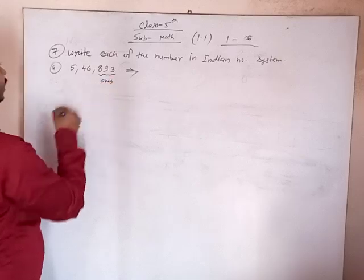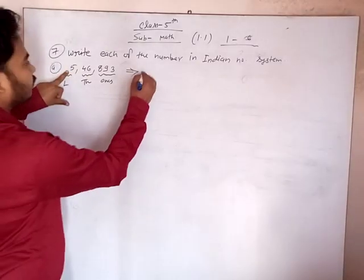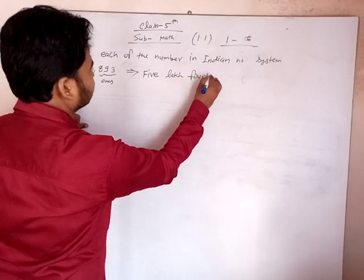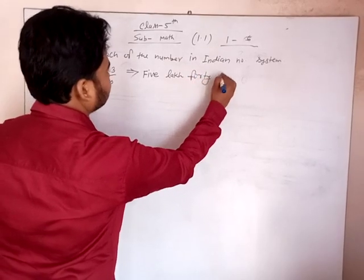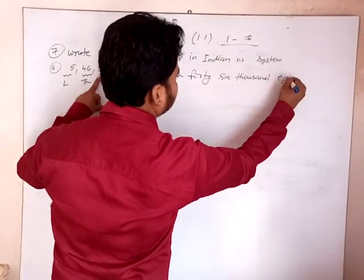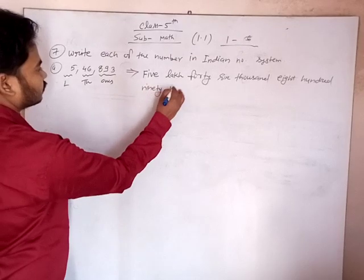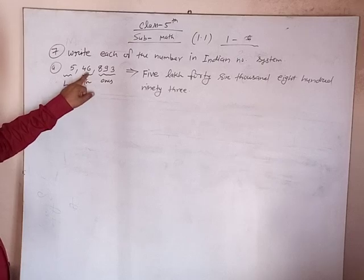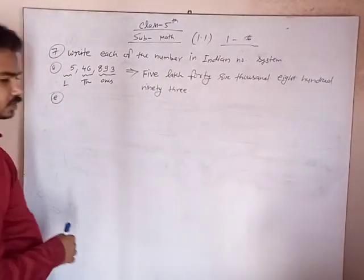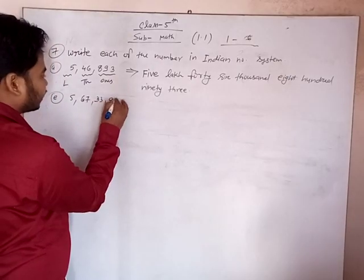In the Indian number system, this is the ones period, this is the thousands period, and this is the lakhs period. So for 5,46,893 — understand?